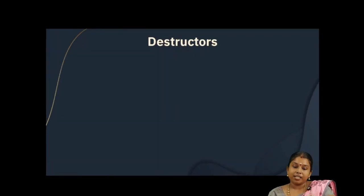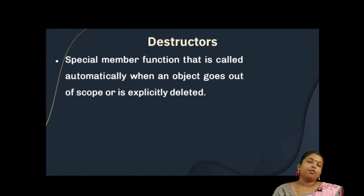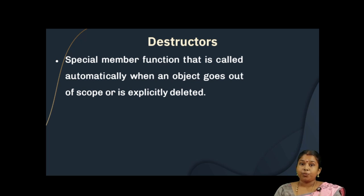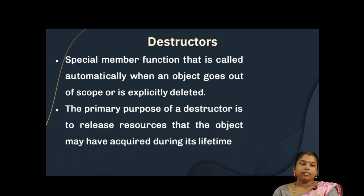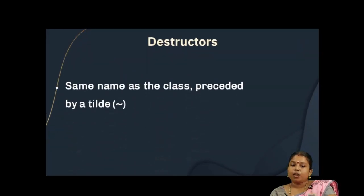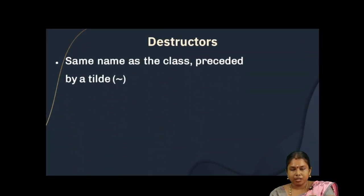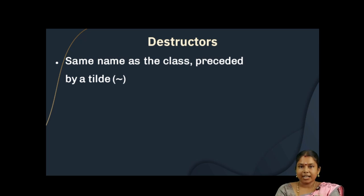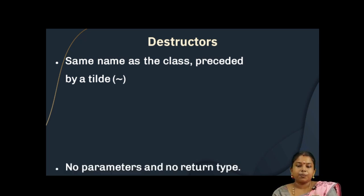Now let's see what is a Destructor. It is a special member function that is automatically called by the compiler whenever an object goes out of scope or is explicitly deleted. Its primary purpose is to release resources that the object may have acquired during its lifetime. The Destructor's name must be the same as the class name, but it should contain a tilde symbol as its prefix.